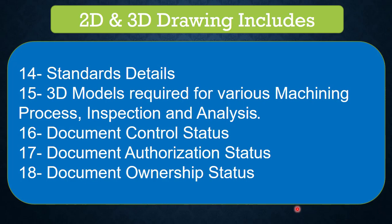Document authorization details — who has prepared, who has reviewed, and who has authorized — are also important as part of document authorization before the drawing goes for die manufacturing. The last item is document ownership status — who is the custodian and owner of the die drawings, whether it is the preparer or the design department. These are the 2D and 3D drawing requirements.